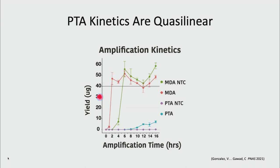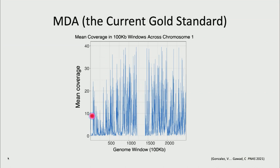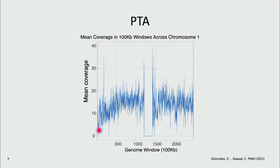If you look at DNA yield over time, MDA and MDA with no template both just start making a bunch of DNA after a couple of hours, even with no template. With PTA, the reaction was slower to take off, but the slope of the line is much more linear — that looked promising. Looking at genome coverage, with PTA we're covering in each cell almost the entire same amount of the genome as in a bulk sample. Uniformity-wise: with MDA across chromosome 1, you see all these jackpotting events and loss of coverage at the centromere due to GC content. PTA is not perfectly uniform but shows much less of these big peaks and valleys.